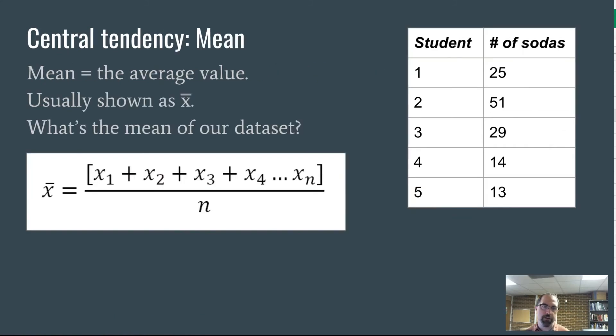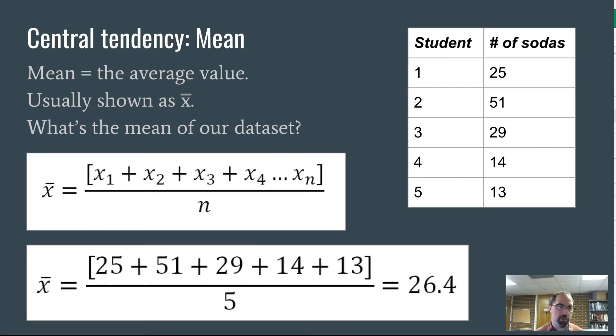There's three measures of central tendency that can help us with this. The mean, as many of you know, is the average value. It's the thing that's kind of in the middle statistically. It's usually shown as this X bar. We just add up all the values and divide by the number of observations. In this case, we would do 25 plus 51 plus 29 plus 14 plus 13 divided by five and you get 26.4. The average number of sodas consumed is 26.4.